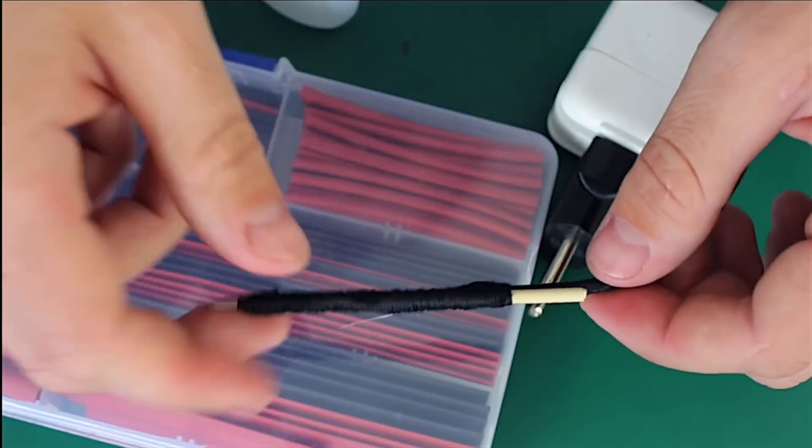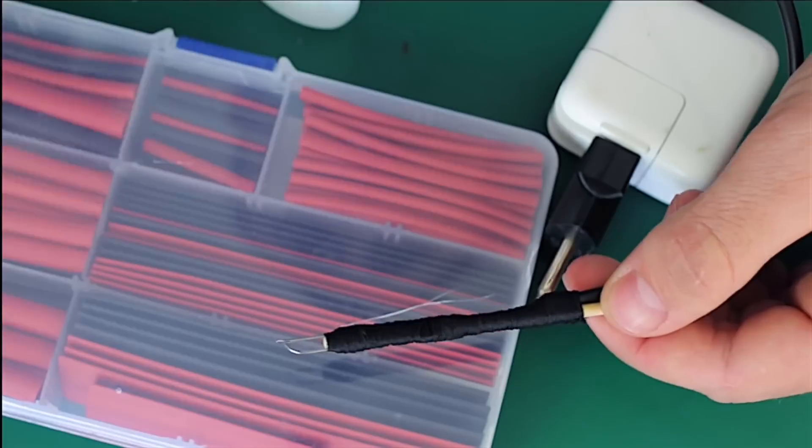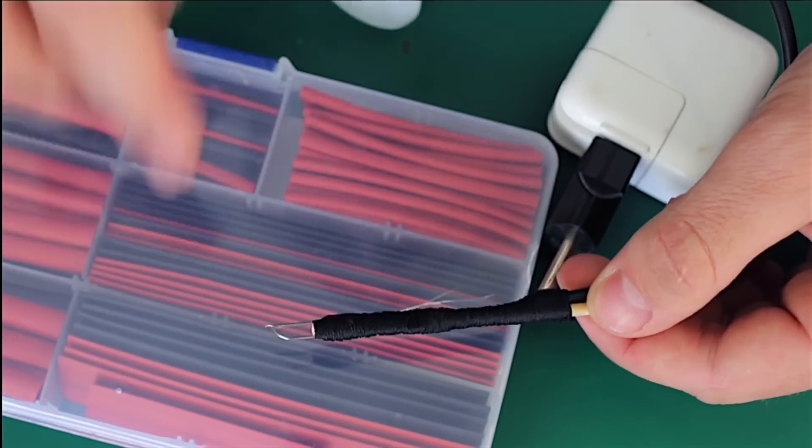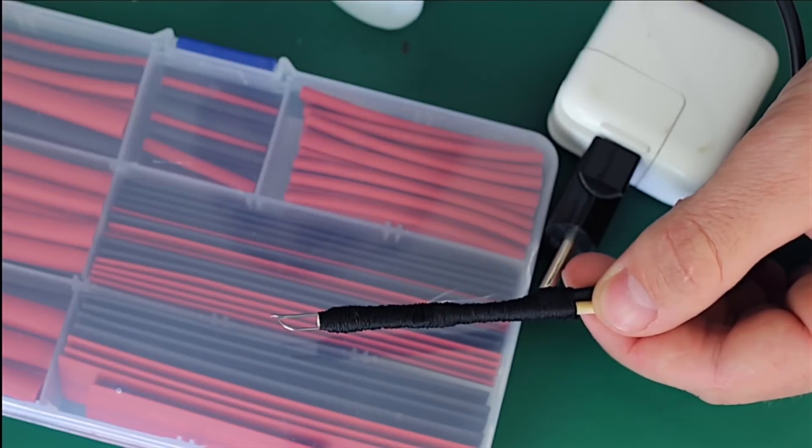So, our pyrography tool is almost ready. To make it more safe, I'll soak the threads with super glue. And then put on some heat shrink sleeve.